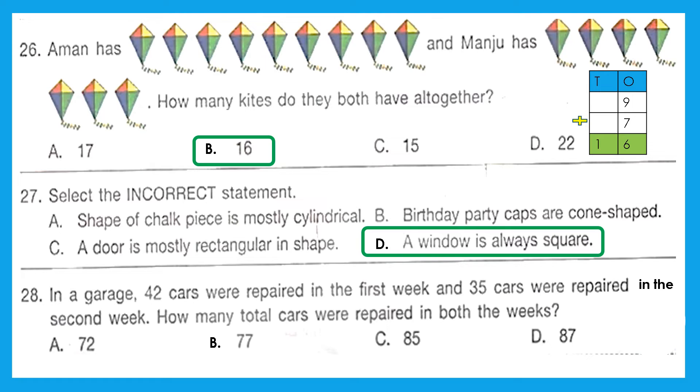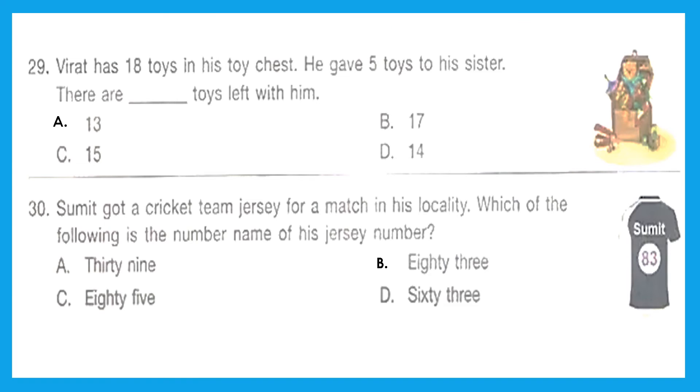Question 28: In a garage, 42 cars were repaired in the first week. Okay, then 35 cars were repaired in the second week. Okay, how many total cars were repaired in both the weeks? So they are talking about the total of these two: 42 plus 35 equals 77. Right answer is option B. Question 29: Virat has 18 toys in his toy chest. He gave 5 toys to his sister. How many toys are left with him? So we have to find what is remaining, so we have to do the subtraction: 18 minus 5 equals 13. Option A is the right answer.